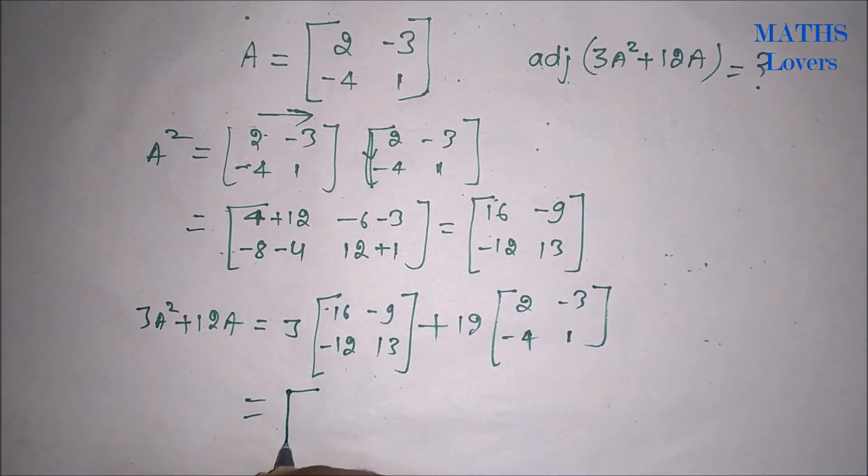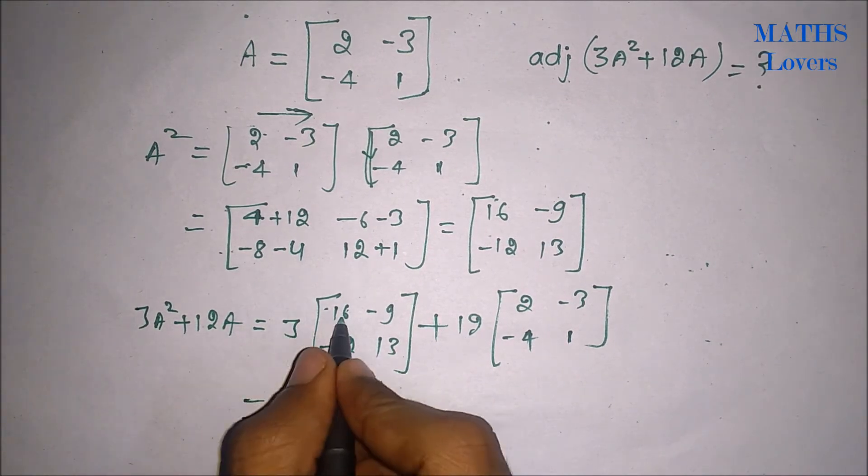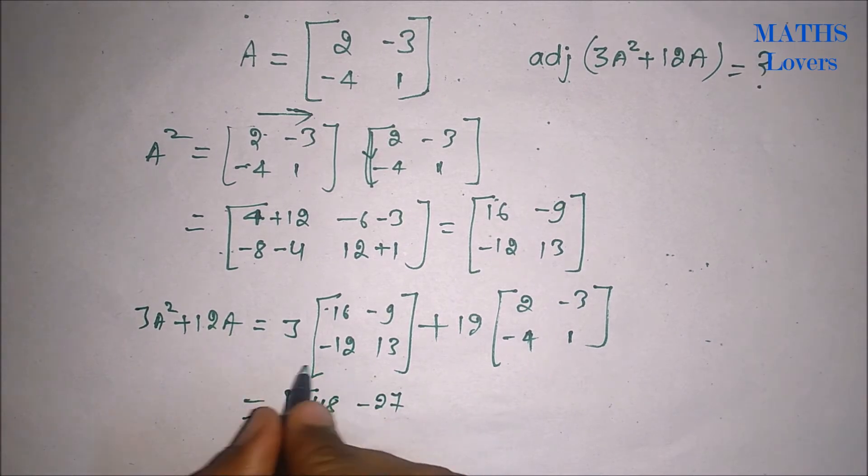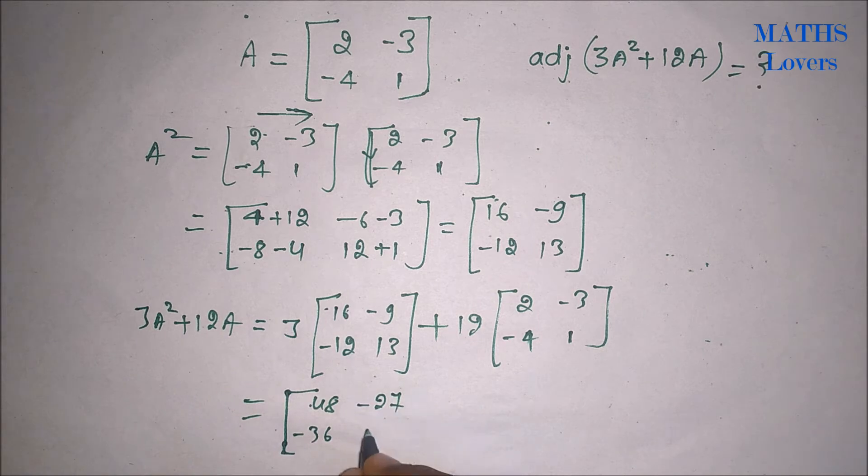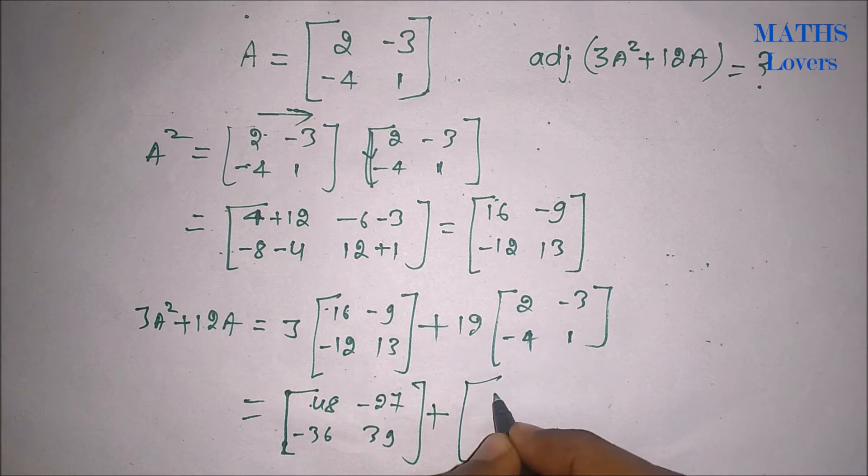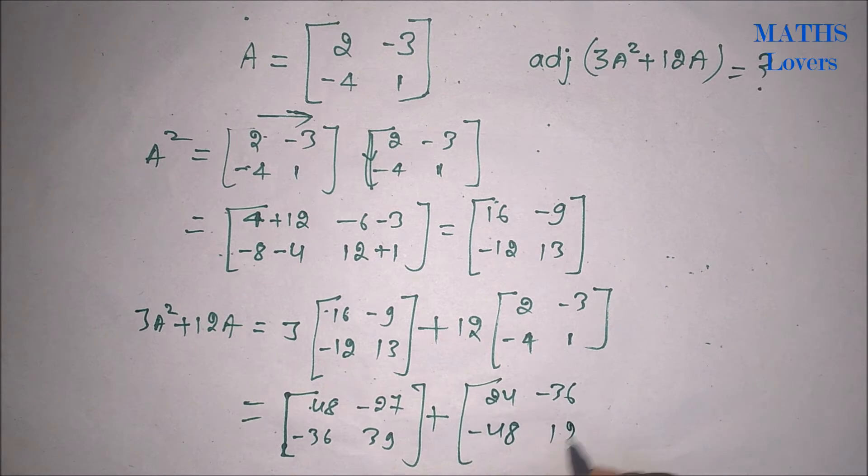So if we solve this we can multiply 16 into 3 equals 48, 3 into minus 9 equals minus 27, minus 36 and this is 39. And if we multiply this we will get 24, minus 36, minus 48 and 12.